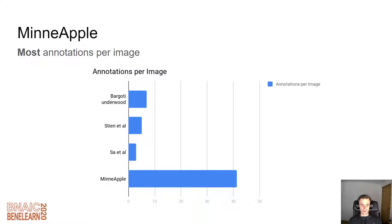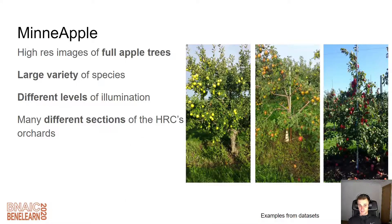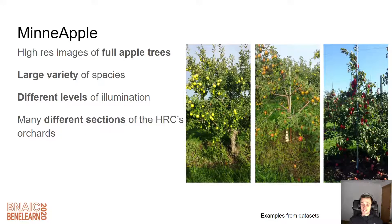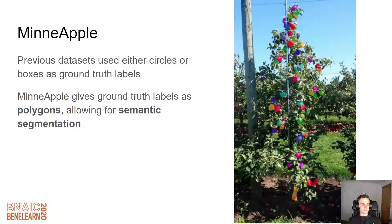Let's get on to MinApple. The annotations per image are massively increased compared to any of the previous datasets, due to the fact that the images are full-resolution, hand-labeled images of entire apple trees. Here are some examples — full apple trees with many apples, each hand-labeled with a polygon so we know exactly where they are. At high resolution, there is a large variety of species, different levels of illumination, images taken at different times of day and year, and from many different sections of the orchard. The previous datasets used circles or bounding boxes as ground truth labels, but MinApple provides polygons, which allows for specific semantic segmentation.